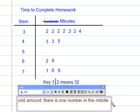If it had been an even amount of data, there would be two numbers in the middle.